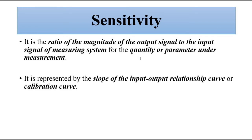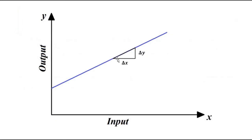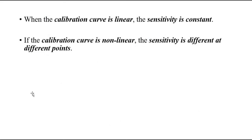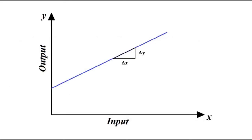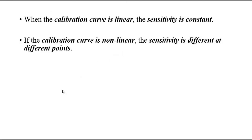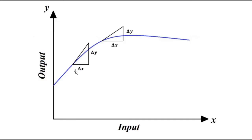Sensitivity is defined for the parameter which is under measurement. It is the slope of the input-output relationship curve, also called the calibration curve. If the input-output relationship curve is linear, the sensitivity will be fixed. But if it is nonlinear, the sensitivity will be different at different points — the slope will be different at different points, and so will be the sensitivity.